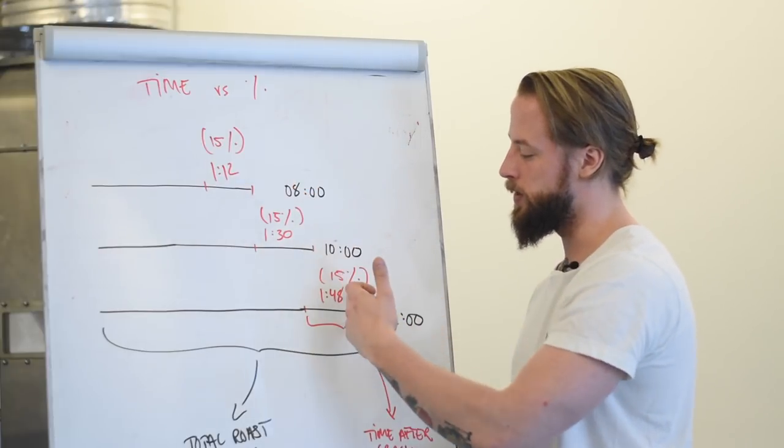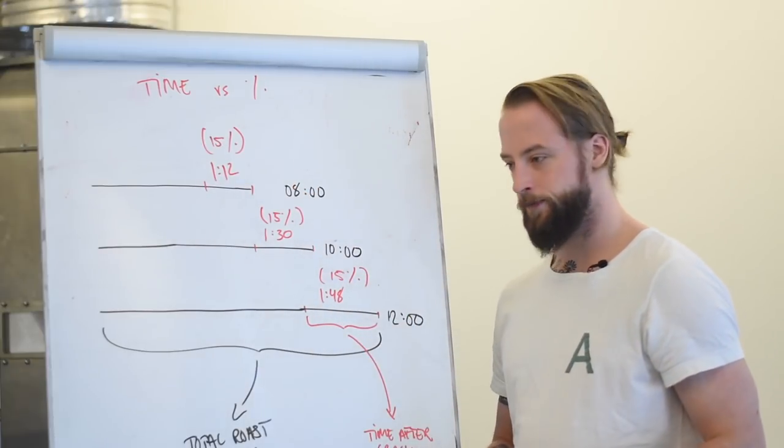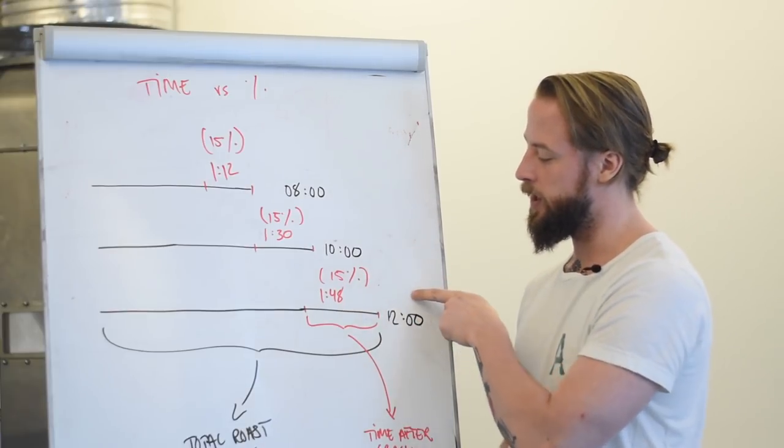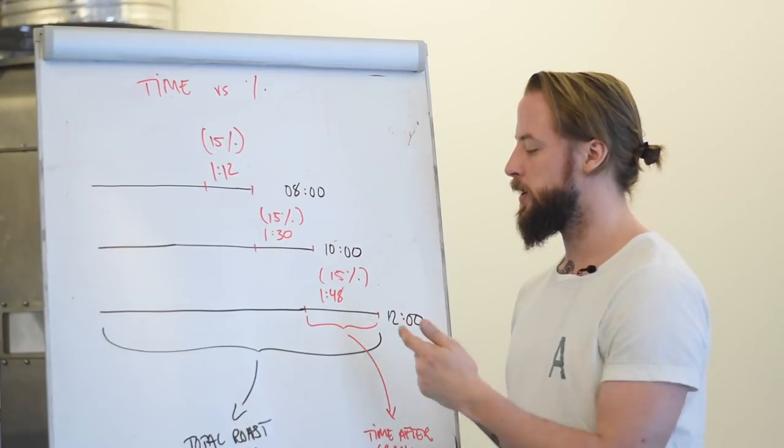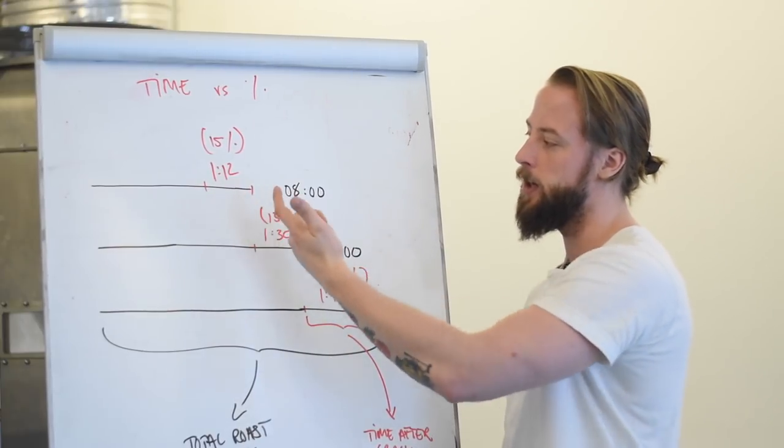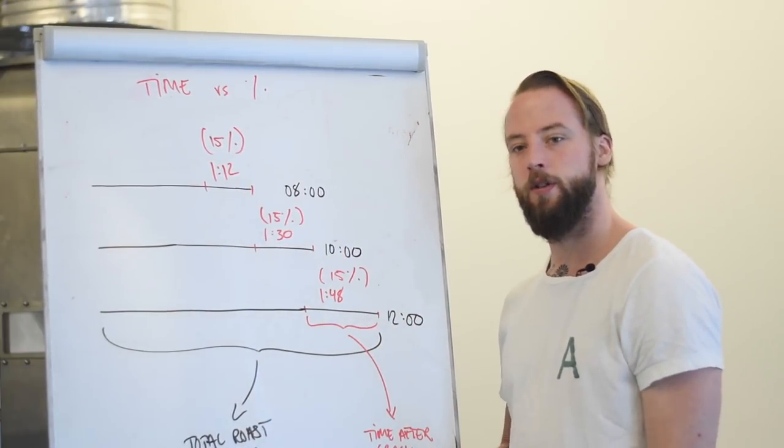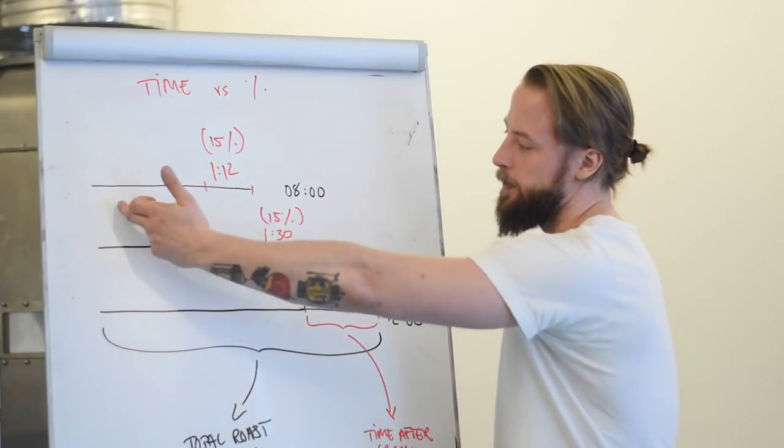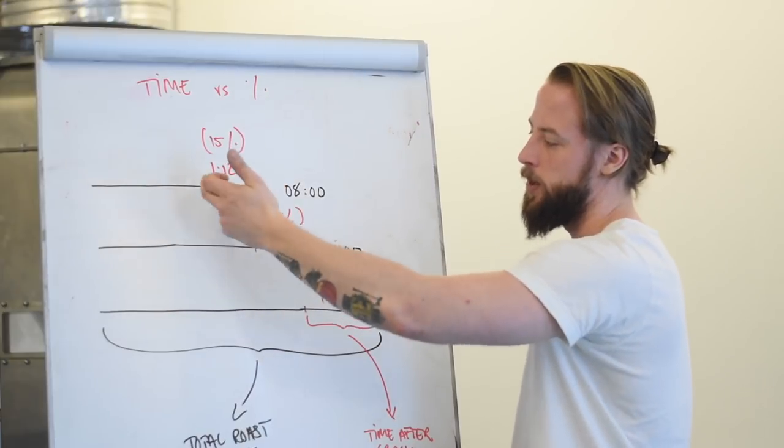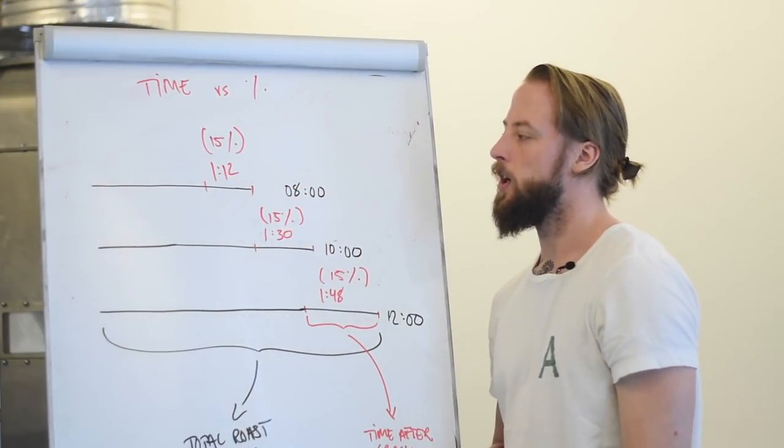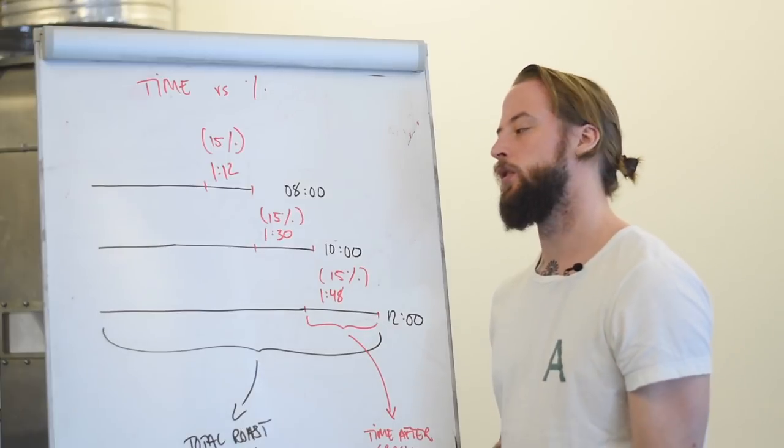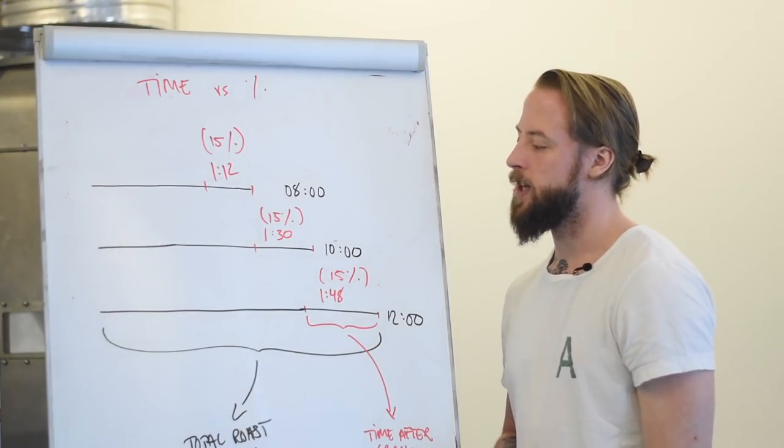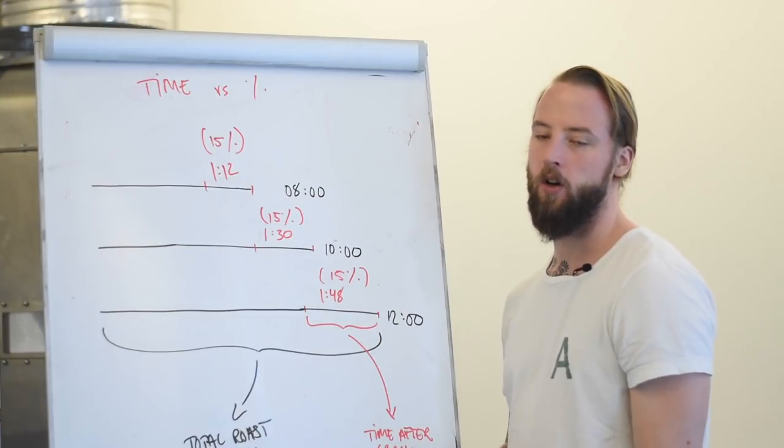Saying that you always should use 15% becomes interesting because then technically 15% here is one minute and 48 seconds, so then you can take one minute 48 seconds and put it here—no, you can't, because you're going to have a significantly darker roasted coffee. It's not necessarily based on what's happening here, that the total duration is eight. That's not how coffee roasting works—they're not linked together to that extent.